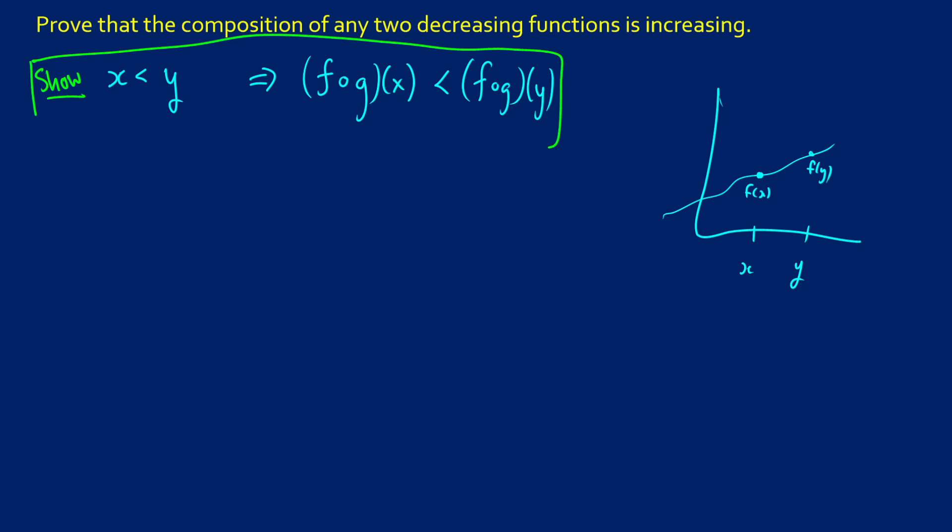So what is the proof? Well, for the proof itself, we are going to start by making some assumptions. So what do we have? We have two decreasing functions. So we're going to say let f and g be decreasing.